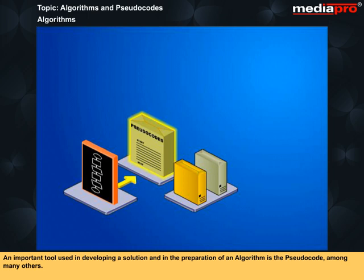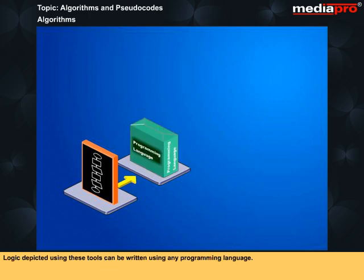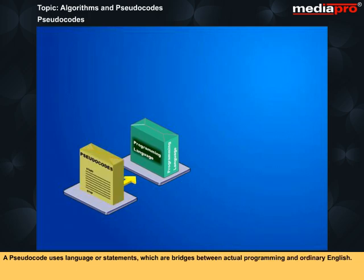An important tool used in developing a solution and in preparation of an algorithm is the pseudocode. Pseudocode means writing the program logic in a simple English-like language. Logic depicted using these tools can be written using any programming language. In other words, these are generic tools. A pseudocode uses language or statements which are bridges between actual programming and ordinary English.